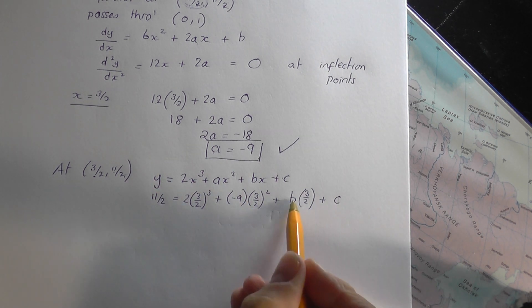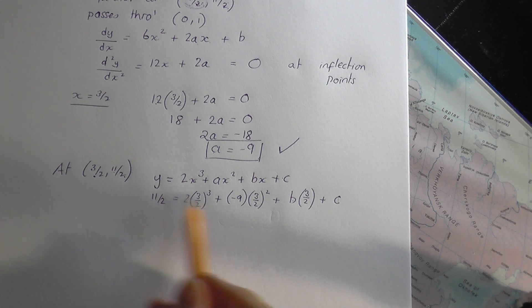So, we get this equation coming out, and it's got b and c in. Two unknowns. Let's just tidy up things.